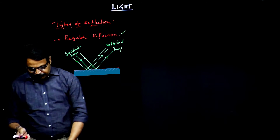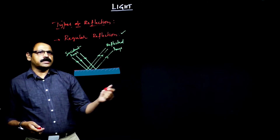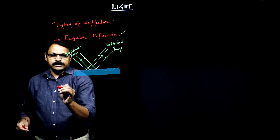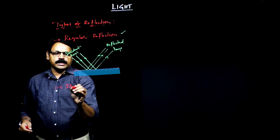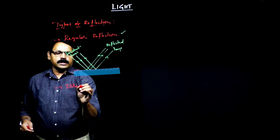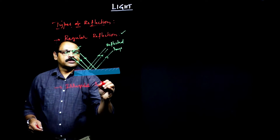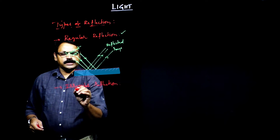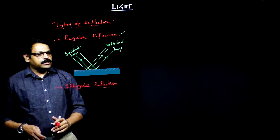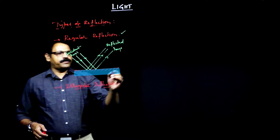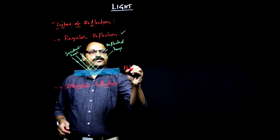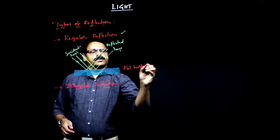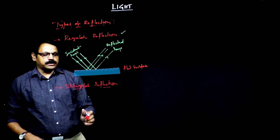The other type of reflection is irregular reflection — that is the second type. Generally, regular reflection is possible in the case of flat surfaces. So on a flat surface you can think of regular reflection.